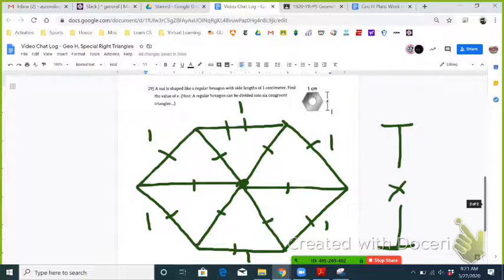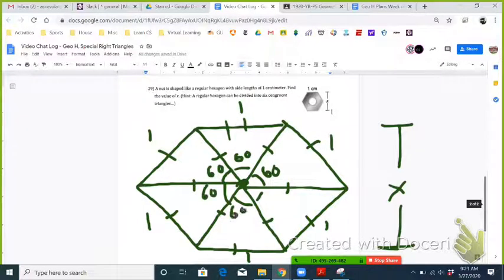Because all these triangles are congruent and those six angles have to add up to 360 degrees, if you divide that by 6, you get each of these angles are 60 degrees. So if you have an isosceles triangle where the vertex angle is 60, then the base angles also have to be 60. So these triangles are equilateral.